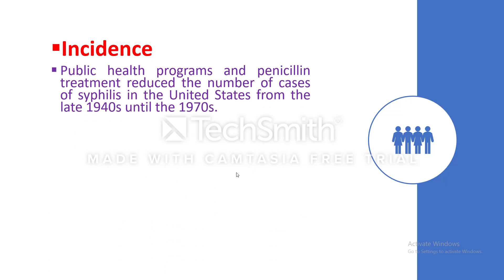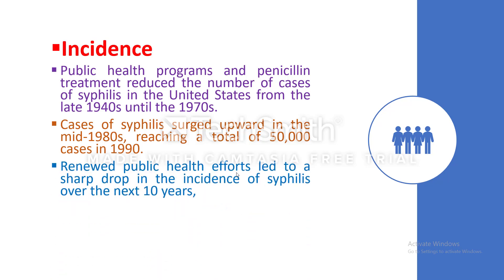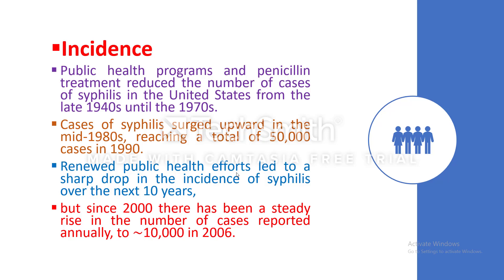Public health programs and penicillin treatment reduced the number of cases of syphilis in the United States from the late 1940s until the 1970s. Cases surged upward in the mid-1980s, reaching a total of 50,000 cases in 1990. Renewed public health efforts led to a sharp drop over the next 10 years, but since 2000 there has been a steady rise, reaching 10,000 cases reported annually in 2006.